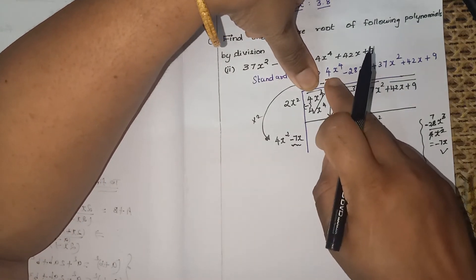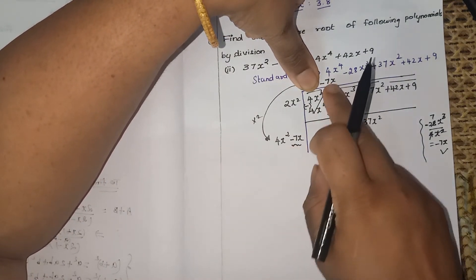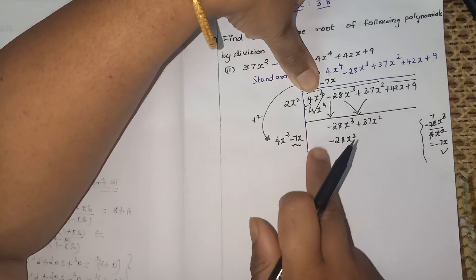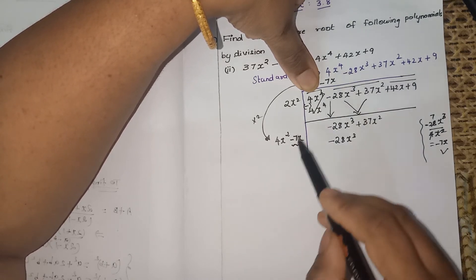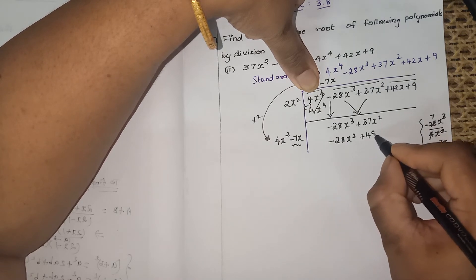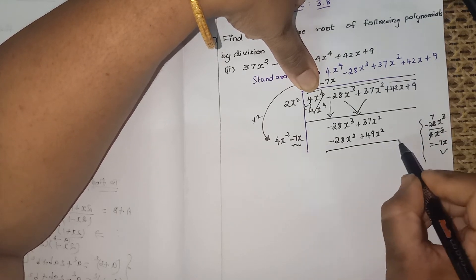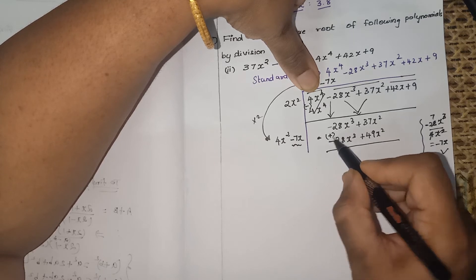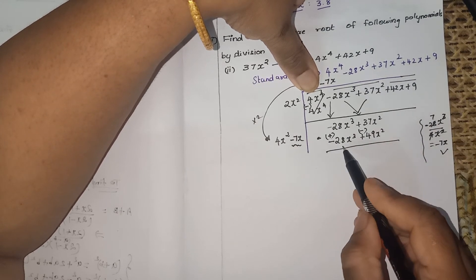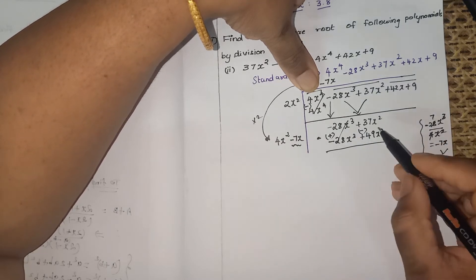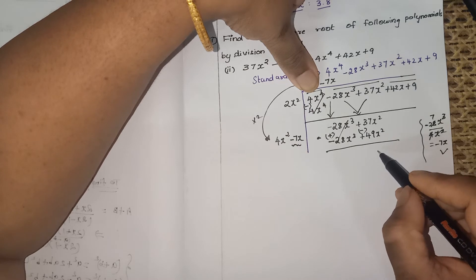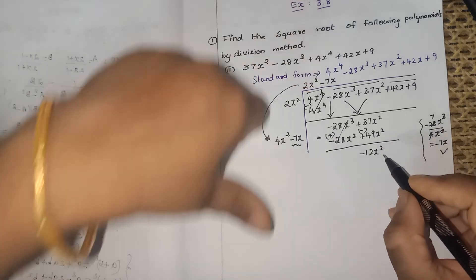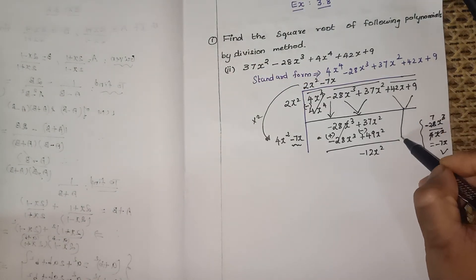Multiply minus 7x into the full divisor: minus 7x × 4x² = minus 28x³, and minus 7x × minus 7x = plus 49x². Now subtract: minus 28x³ cancels with plus 28x³. Then 37x² minus 49x² = minus 12x². Drop down the next two terms: plus 42x plus 9.